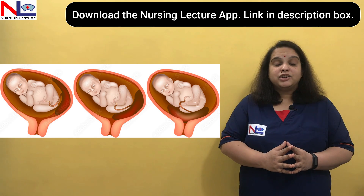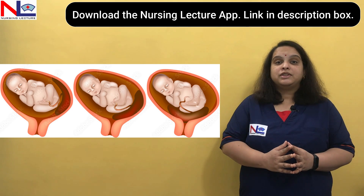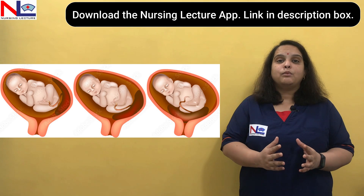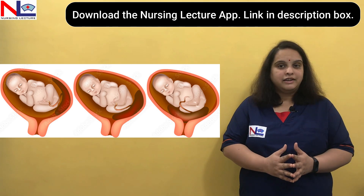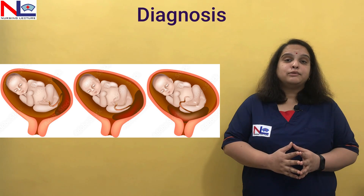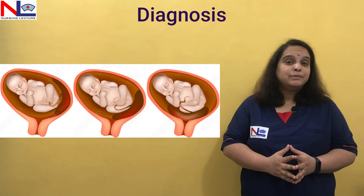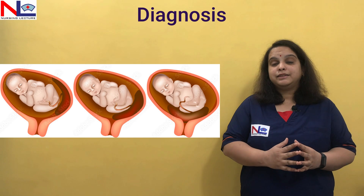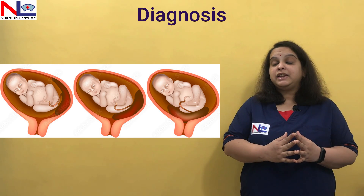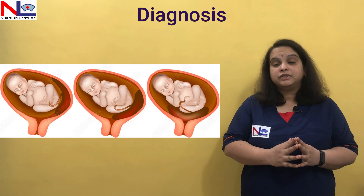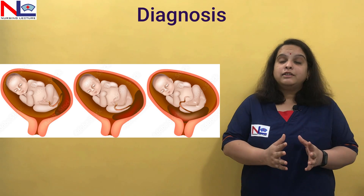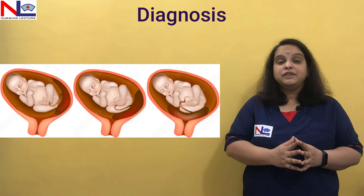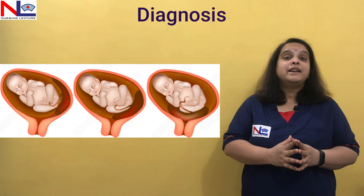Let's talk about the management, the diagnostic evaluation by which we can identify whether placenta previa is present or not, and what complications are associated with this condition. If the woman is bleeding after the viability of the fetus, the important thing is that once we suspect bleeding from the genital tract after viability, we never put our fingers in the vagina, because we may be suspecting placenta previa.